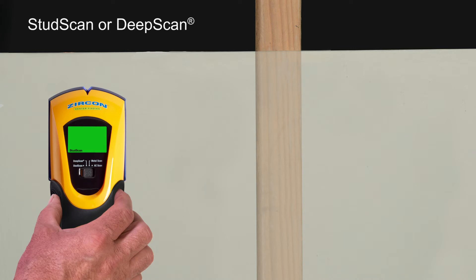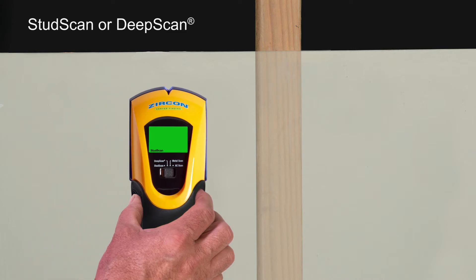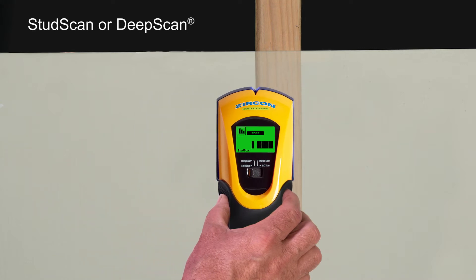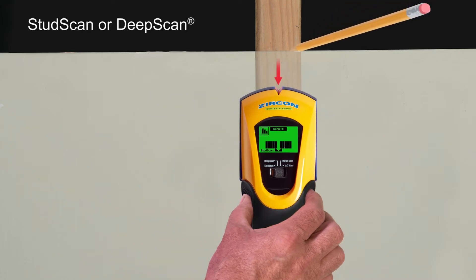To find studs, select stud scan mode. To find deep studs, select deep scan mode. The display indicates when you're near and find a stud edge. The spotlight pointer shines when you've found the center.